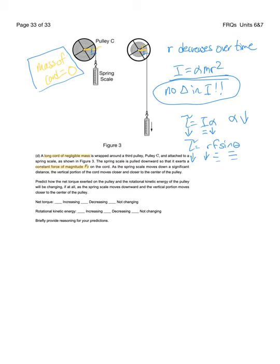So now predict how the net torque exerted on the pulley and the rotational kinetic energy will be changing. So the torque, if alpha is, we know the torque is decreasing. The torque is decreasing. So the net torque.